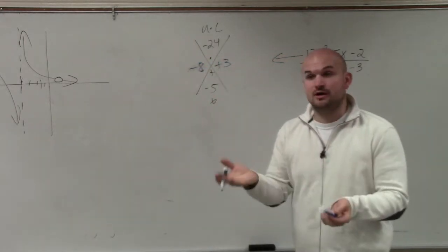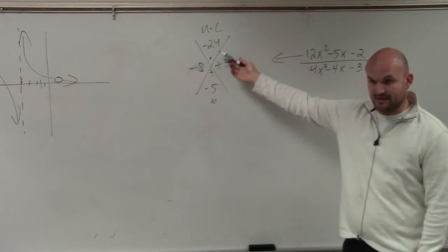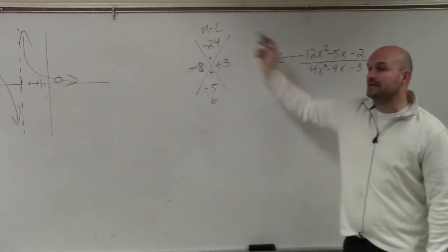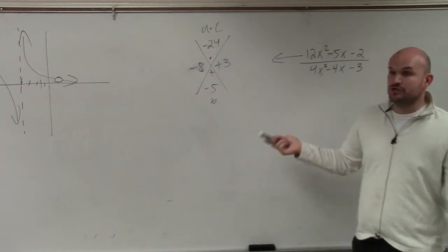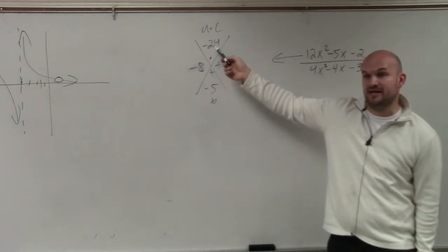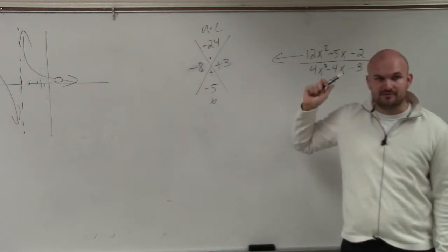So Jamie, if you have a question, I'll be more than happy to answer it. Do you understand A times C? Do you understand why I got that? Yes. 12 times negative 2 is negative 24. Negative 5 came from right there. Then all I'm doing is determining, does negative 8 times 3 give you negative 24? Yes. Does negative 8 plus 3 give you negative 5? Yes.